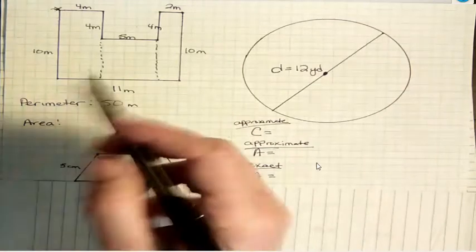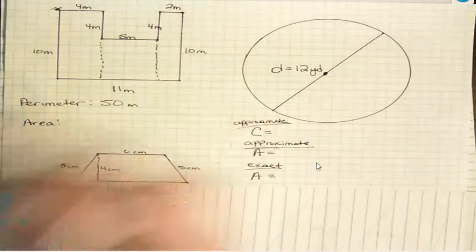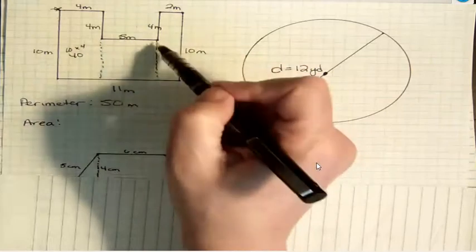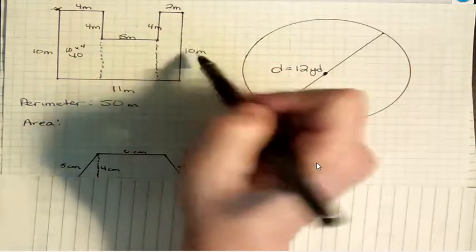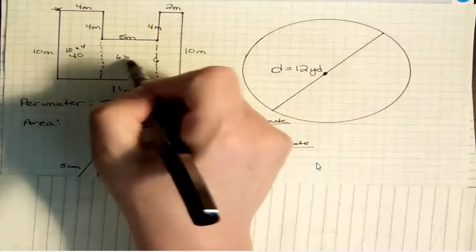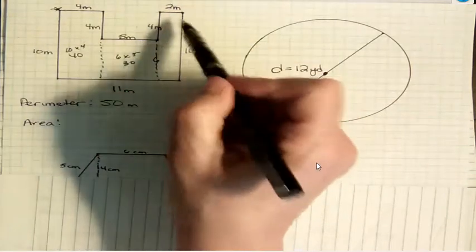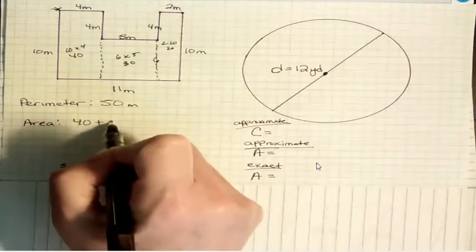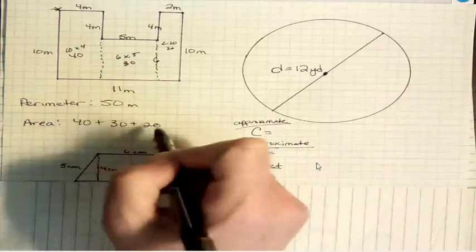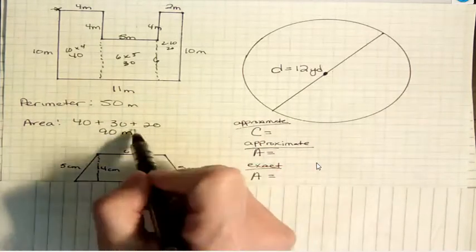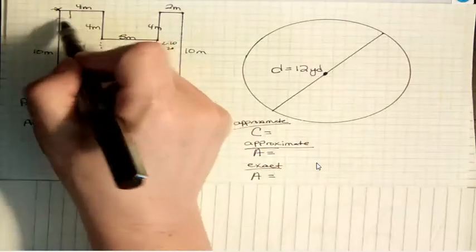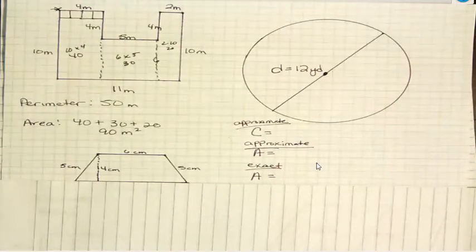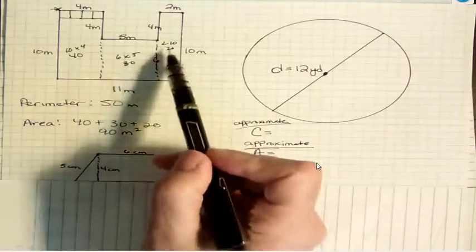To find the area, we're going to find the area of the separate blocks and then add those together. This first block is four by 10. So you're going to do 10 times four or 40. This was four, this whole thing was 10. So this must be six. So I have six times five, which is 30. And then over here, I have two times 10, which is 20. So my area is the sum of those three parts, 40, 30, and 20, which is 90. And when you're talking about area, you have to have square units because you're saying how many of these little squares are there inside this whole thing.